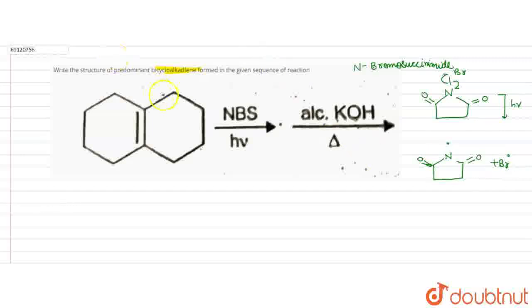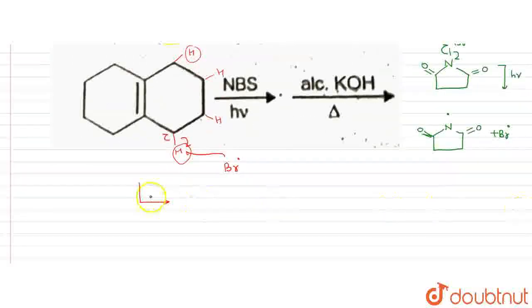What will NBS do? NBS will cause bromination through a free radical mechanism. The bromine free radical will abstract hydrogen from the allylic position. The bond will break and combine with the free radical to form the structure. HBr will come out, and the hydrogen abstraction gives you a stabilized free radical.